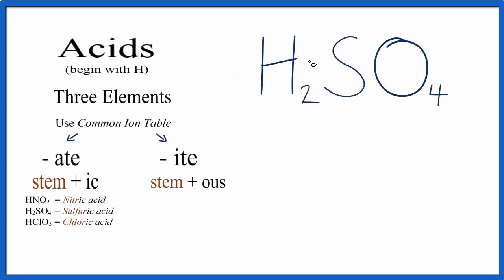So we have our hydrogen, that's what makes this an acid, and that's bonded to this SO4 group called a polyatomic ion. What we need to know is the name of this polyatomic ion so we can name the acid.